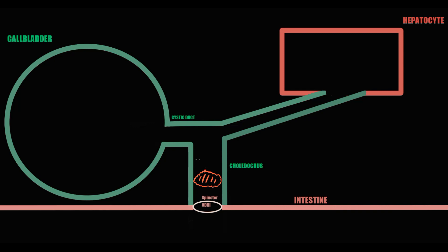If stone causes obstruction of the common bile duct, we call this condition choledocholithiasis. With stone in the common bile duct, bile cannot pass into the duodenum. As a result, bile begins to accumulate in the common bile duct. Accumulation of bile distends the walls of the common bile duct.